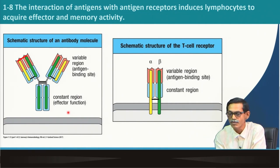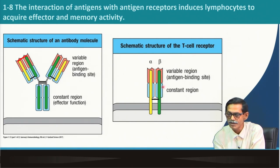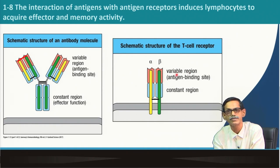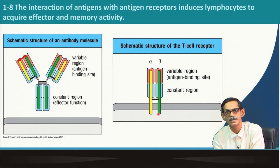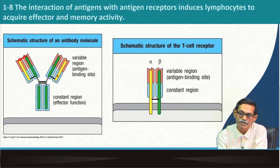The T cell receptor is very similar but not exactly the same — it is much smaller. It also has a constant domain (the blue region) and a variable region on the upper part which is the antigen binding site. There are only two chains: alpha and beta, which are attached through the transmembrane domain. They always remain attached and are never secreted like the B cell receptor as antibody. The alpha and beta chains are also linked by a disulfide bond.